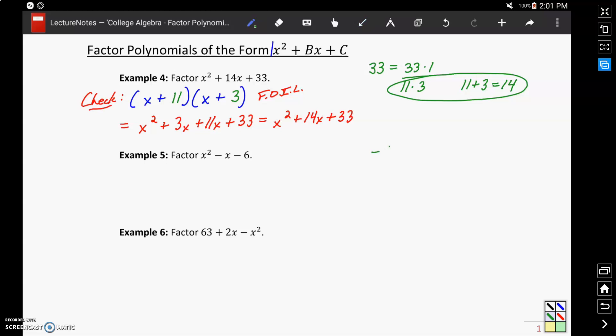In example 5, our value for c is negative 6. We can get negative 6 by taking negative 1 times 6, negative 6 times 1, negative 2 times 3, or negative 3 times 2. And in this case, negative 3 plus 2 would give us negative 1, which is the coefficient for that middle term, meaning those are the two numbers that we want.